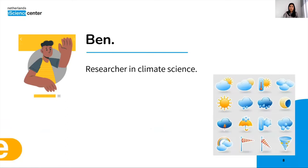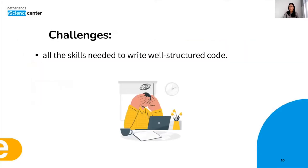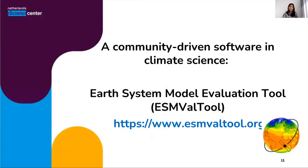This is another story. This is Ben. He is also a researcher in climate science. He wants to analyze air temperature and precipitation simulated by five other different models — very similar to Jane's story. However, developing code is a challenging task for him, because as a researcher he does not have all the skills needed to write well-described and well-structured code. To address these challenges, a community-driven and FAIR software can help.